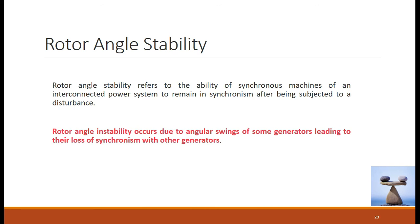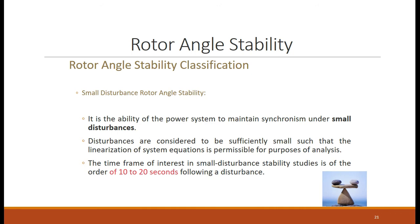If the system is regaining its original stability condition and the deviation of delta is settled under a new angle delta, then it is stable. Otherwise, if the disturbance is so high that the angle delta keeps on increasing, it causes instability or the generator loses its stable condition. The rotor angle stability is classified based on the severity of the disturbance: one classification is small disturbances.